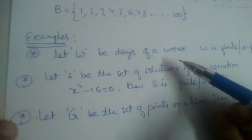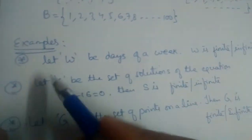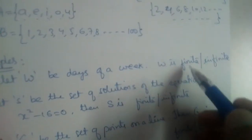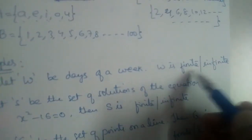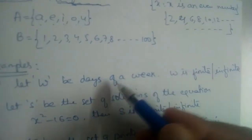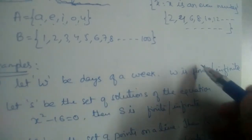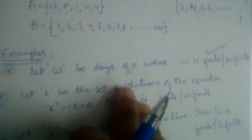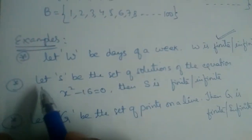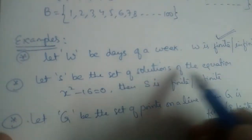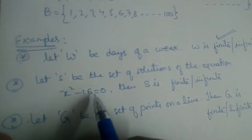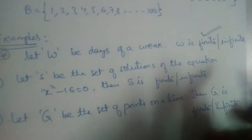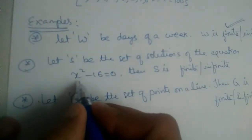I hope the concept of finite and infinite sets is clear. We have a few examples to work through. Let W be the set of days of a week — is W a finite or infinite set? There are seven days in a week, so it is a finite set.